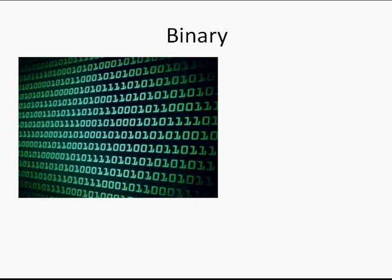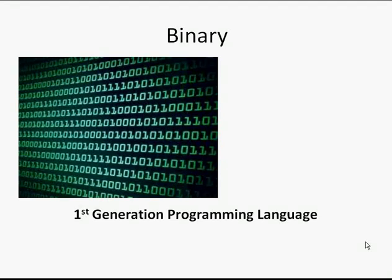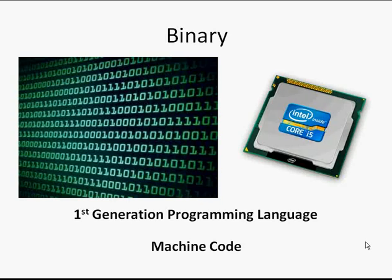Binary language is made up of 1s and 0s and only 1s or 0s. And binary was the first generation of programming language, also known as machine code. It was called machine code because we can program machines with it. And one machine that we could program with it is the CPU, the processor.